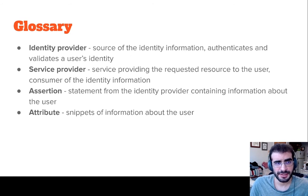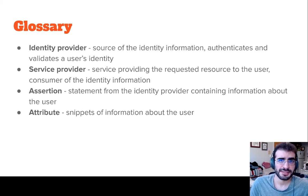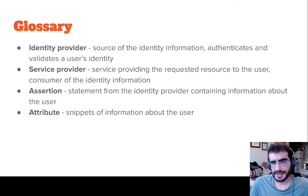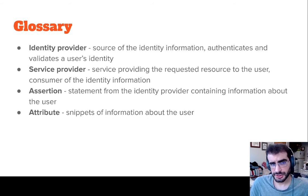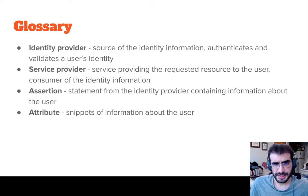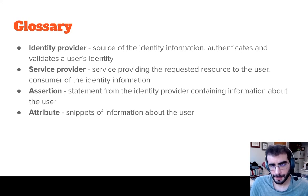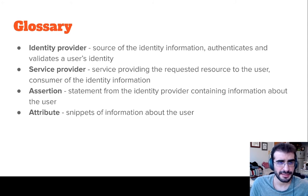Some terminology about federated identity: an identity provider is the source of identity information — it authenticates and validates a user's identity. A service provider provides the requested resource and is the consumer of the identity information from the identity provider. An assertion is the statement from the identity provider containing information about an authenticating user. This assertion contains multiple attributes, for example the user's full name, email address, date of birth, or other attributes the identity provider releases to the service provider.